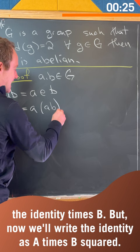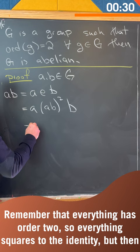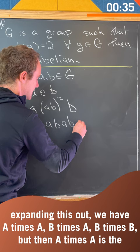Remember that everything has order 2, so everything squares to the identity. But then expanding this out, we have a times ab times ab times b.